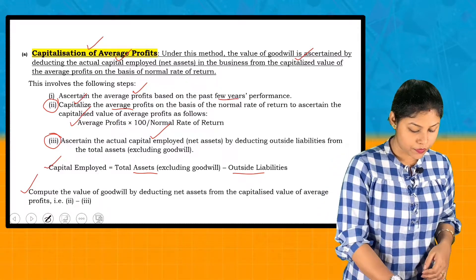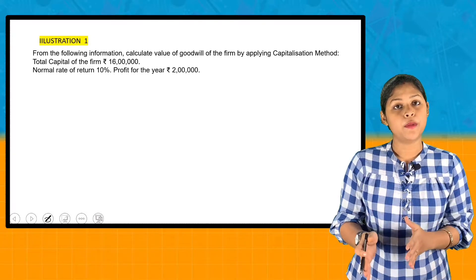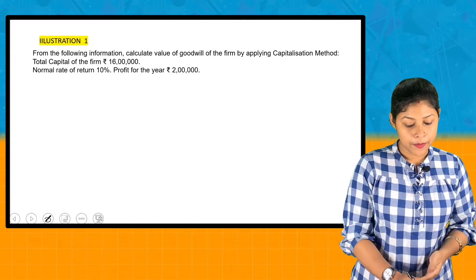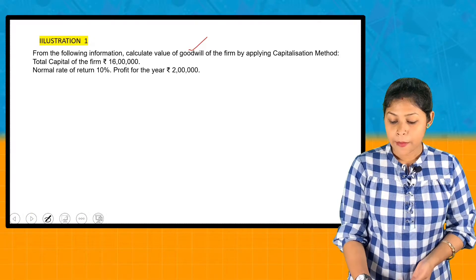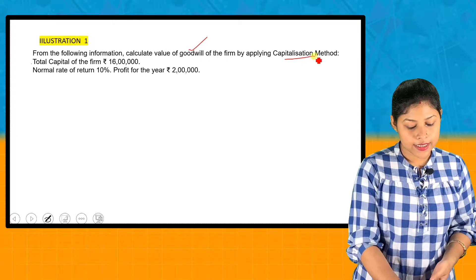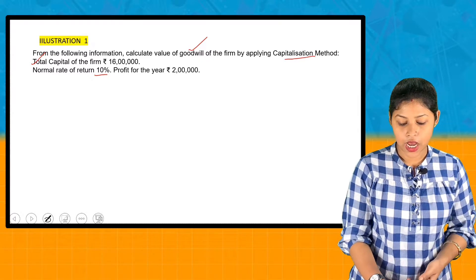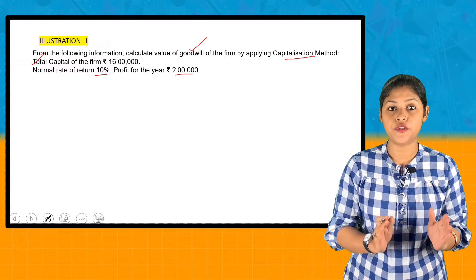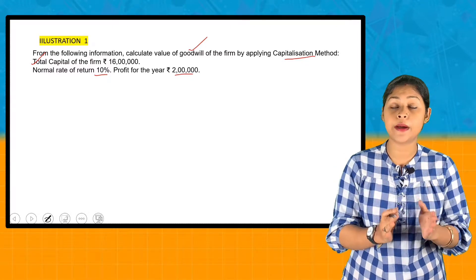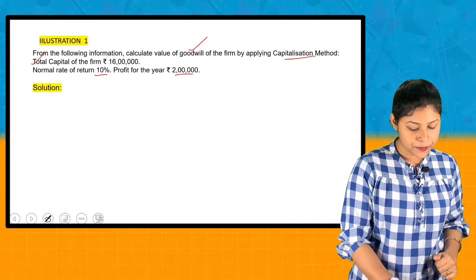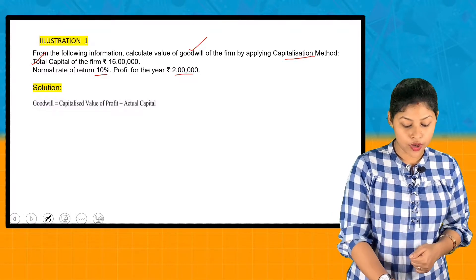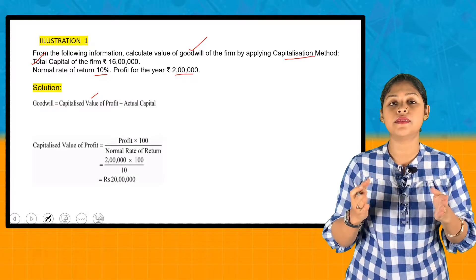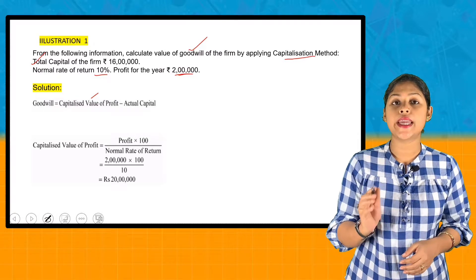Let's look at a practical problem. You need to calculate the value of goodwill by applying the Capitalization Method. The total capital employed is 16 lakh, the normal rate of return is 10%, and the profit for the year is 2 lakh. The solution: calculate the capitalized value of profit, which equals profit multiplied by 100 divided by the normal rate of return — that is 2 lakh × 100 ÷ 10.